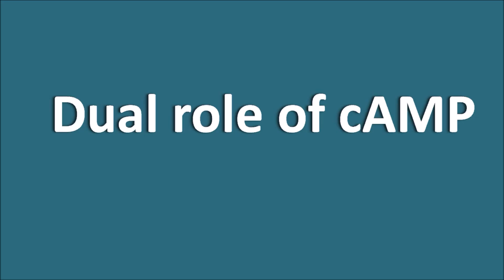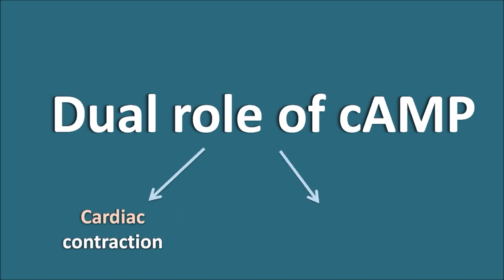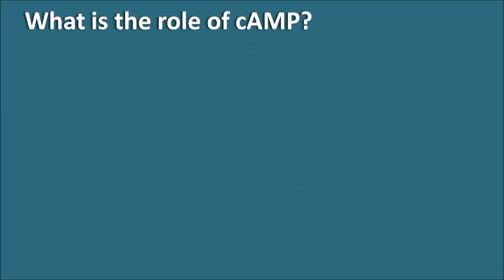This video covers the dual role of cyclic AMP. Cyclic AMP can produce cardiac contraction while simultaneously producing smooth muscle relaxation. So how can cyclic AMP produce quite opposite effects — contraction in the heart and relaxation in smooth muscle? Let us explore the role of cyclic AMP in our physiological system.